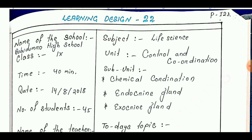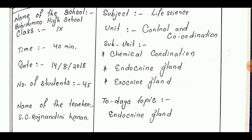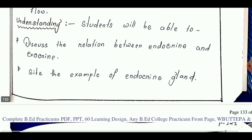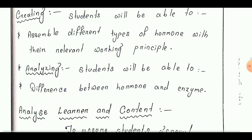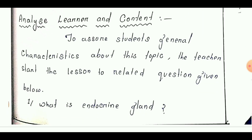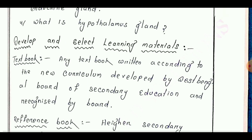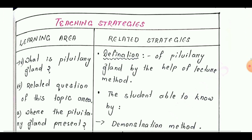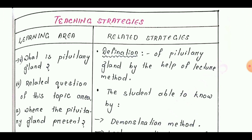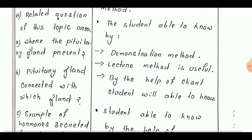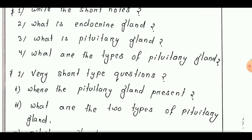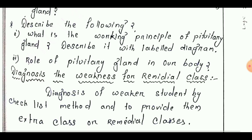Learning design number 22 is taken from Class 9. Today's topic is 'Endocrine Glands.' Learning goals are: remembering, understanding, applying, analyzing, evaluating, and creating. Next is analyze learner and content, then develop and select learning materials. Teaching strategy is divided into two parts: learning area and their related strategies. Next point is design for evaluation, and the last point is diagnosing the weakness for remedial class.